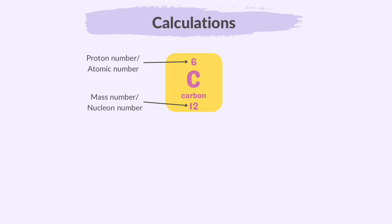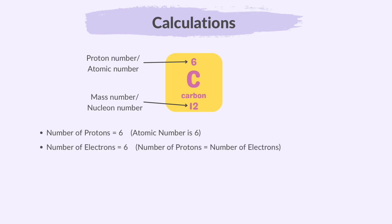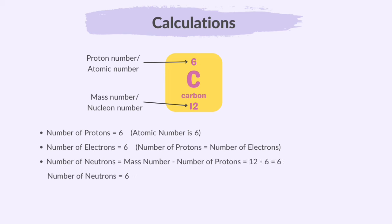We can find the number of neutrons in an atom using a simple calculation. Take the element carbon as an example: it has 6 protons since its atomic number is 6, and 6 electrons since the number of protons equals the number of electrons. To find the number of neutrons, we take the mass number and subtract the number of protons. For carbon, the mass number is 12; take away the number of protons, 6, and we get 6 — which is the number of neutrons.